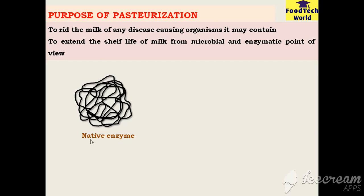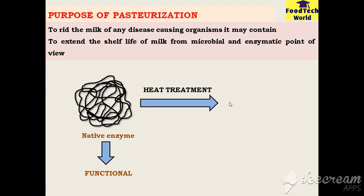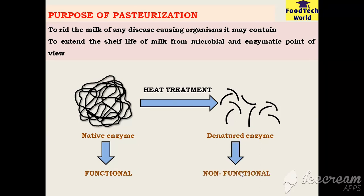We know that pathogens and enzymes have a protein structure. In their native state, enzymes are properly folded and assembled, and only in this form can they perform their specific function — meaning the native enzyme is fully operative and functional. When a native enzyme undergoes heat treatment like pasteurization, it becomes a denatured enzyme. All the bonds present in the native enzyme are broken down due to heat, and the denatured enzyme loses its functionality, becoming unable to spoil food products.